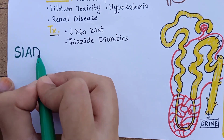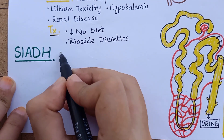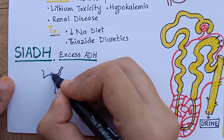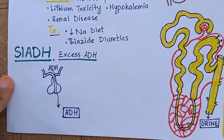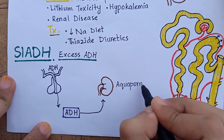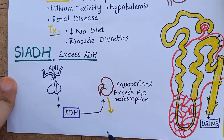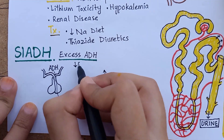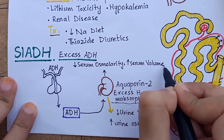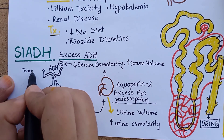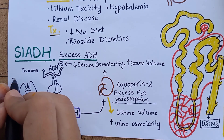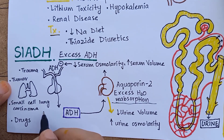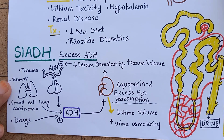Then comes syndrome of inappropriate anti-diuretic hormone, SIADH, in which there are high levels of ADH in the blood. High levels of circulating ADH cause excessive water reabsorption in the distal portion of the nephron via aquaporins and production of a very small amount of concentrated urine. This results in water retention in the body and low serum osmolarity. SIADH can be caused by head trauma, ectopic ADH release — the best example being small cell lung carcinoma — and some drugs, for example selective serotonin reuptake inhibitors.